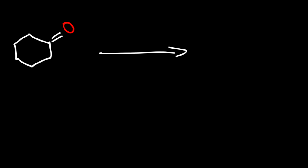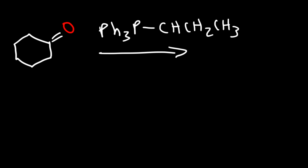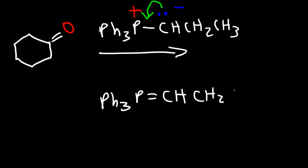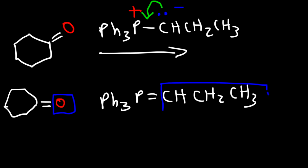Here we have cyclohexanone and we'll react it with an ilid presented in a different form. Sometimes you'll see a positive charge on the phosphorus atom and a negative charge on the carbon atom — that is one way to represent the ilid. If you take that lone pair and form a pi bond, you get the ilid form you're used to seeing. So let's react that with cyclohexanone and replace the oxygen with the group we see in the ilid.